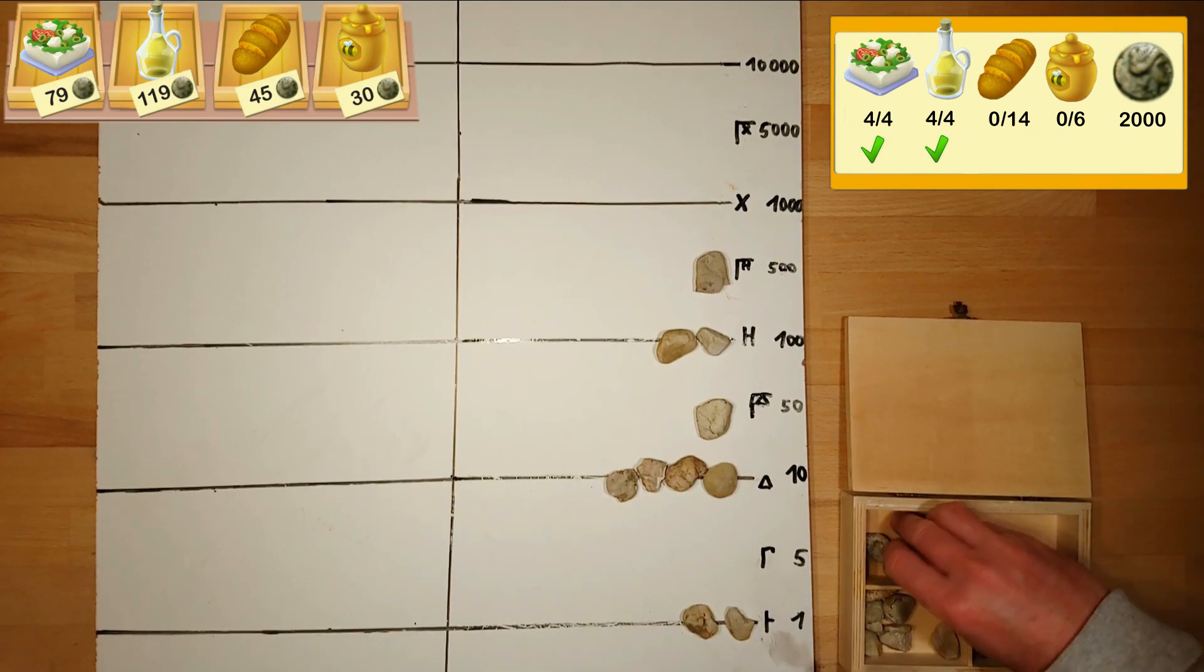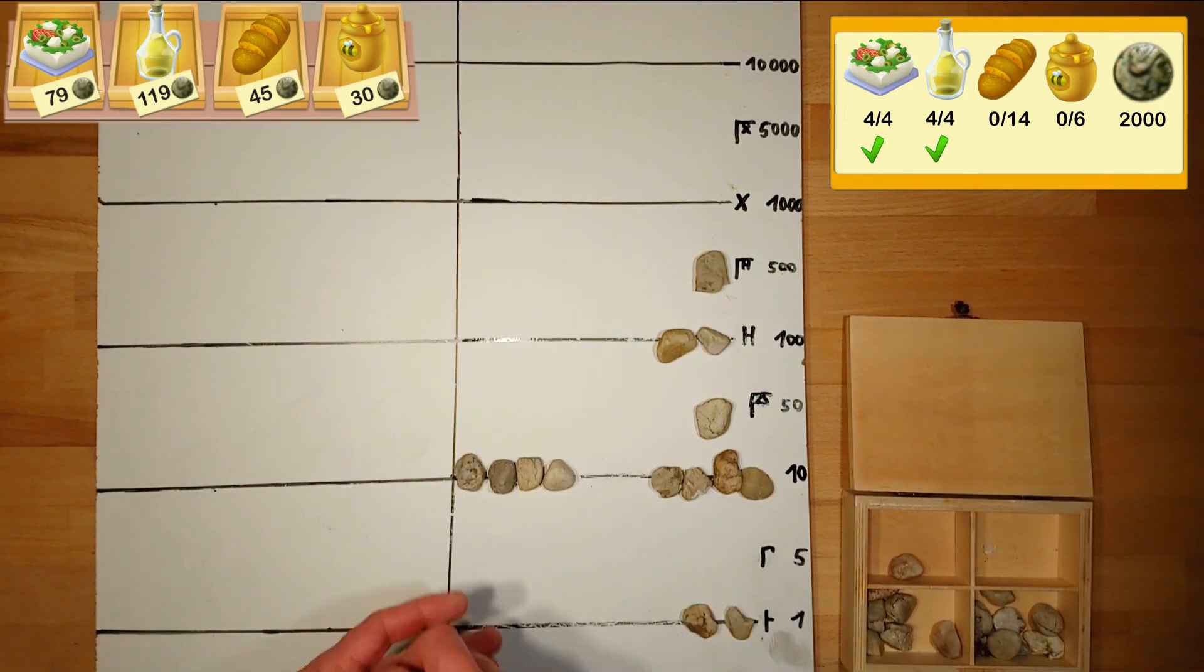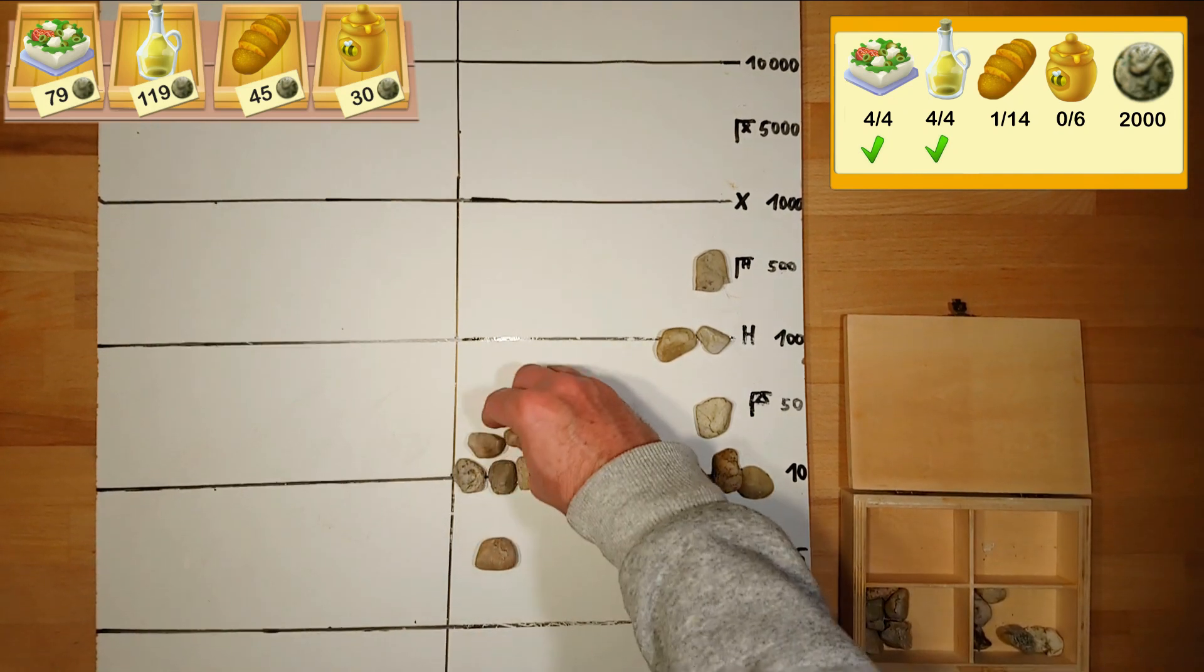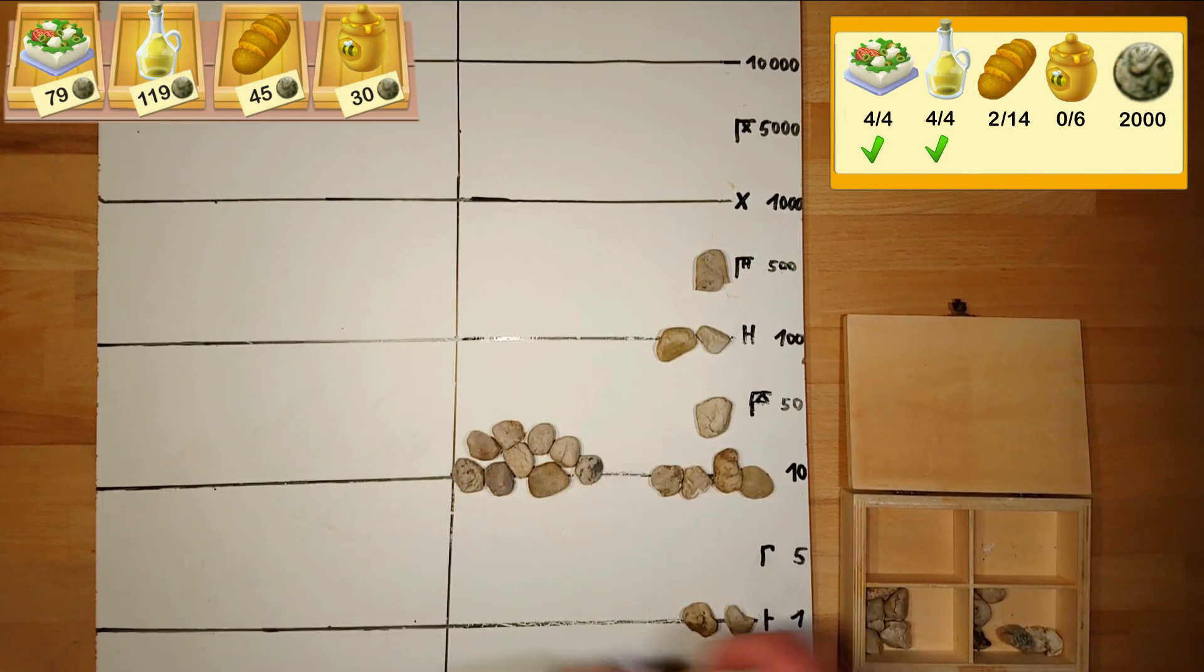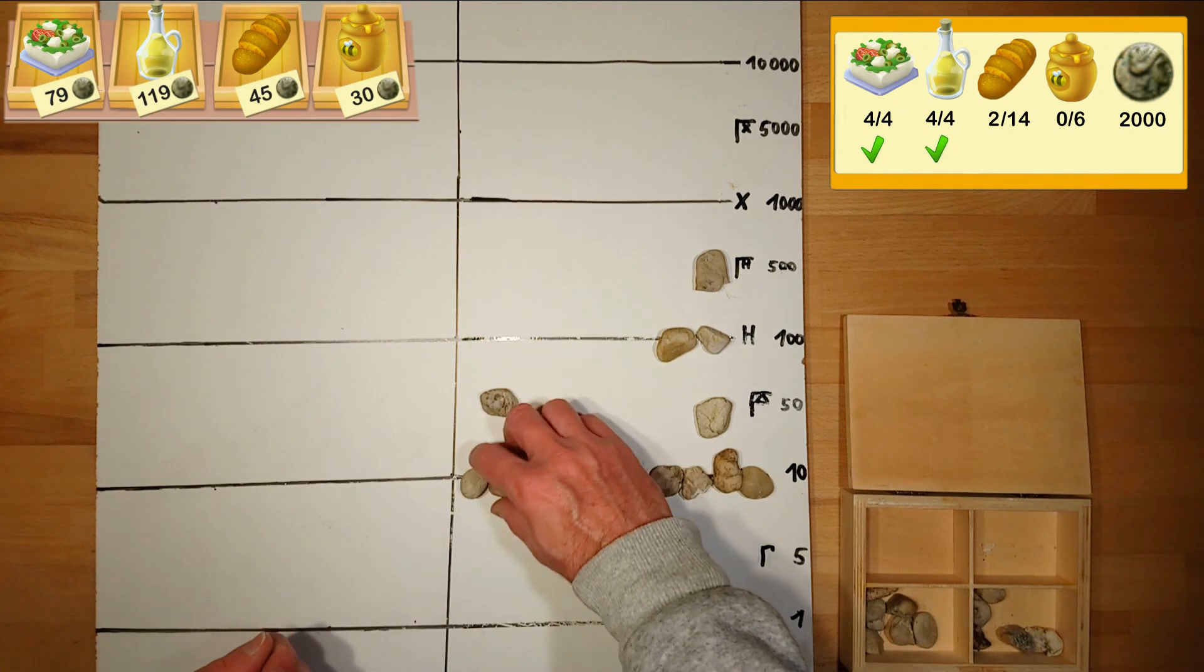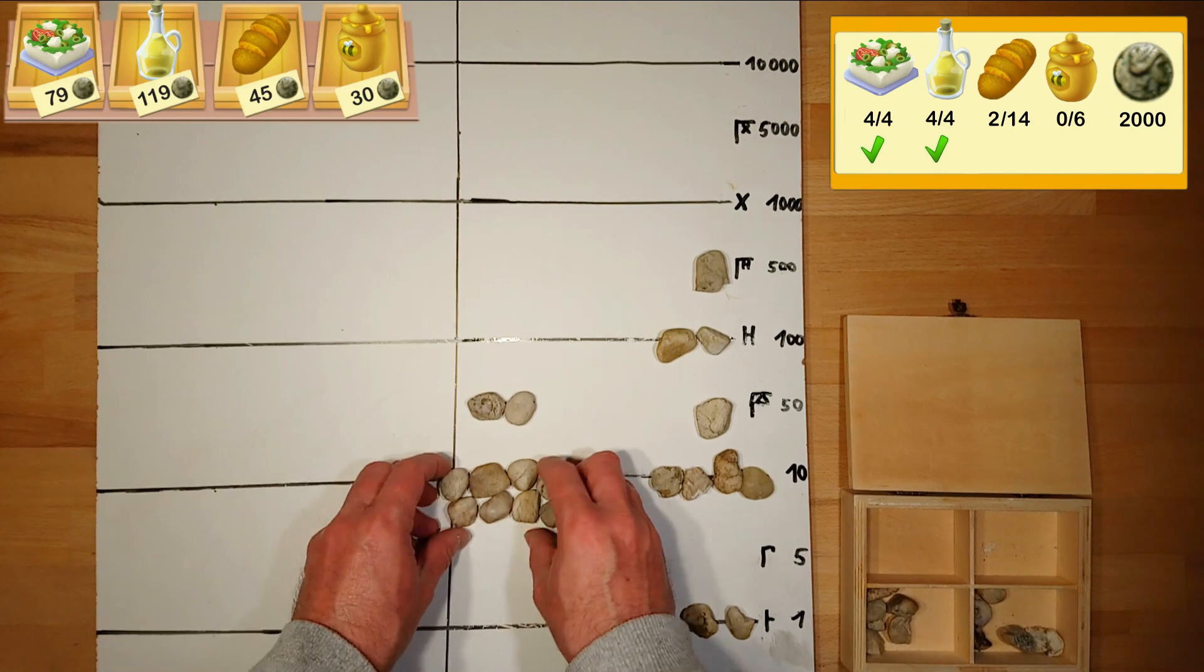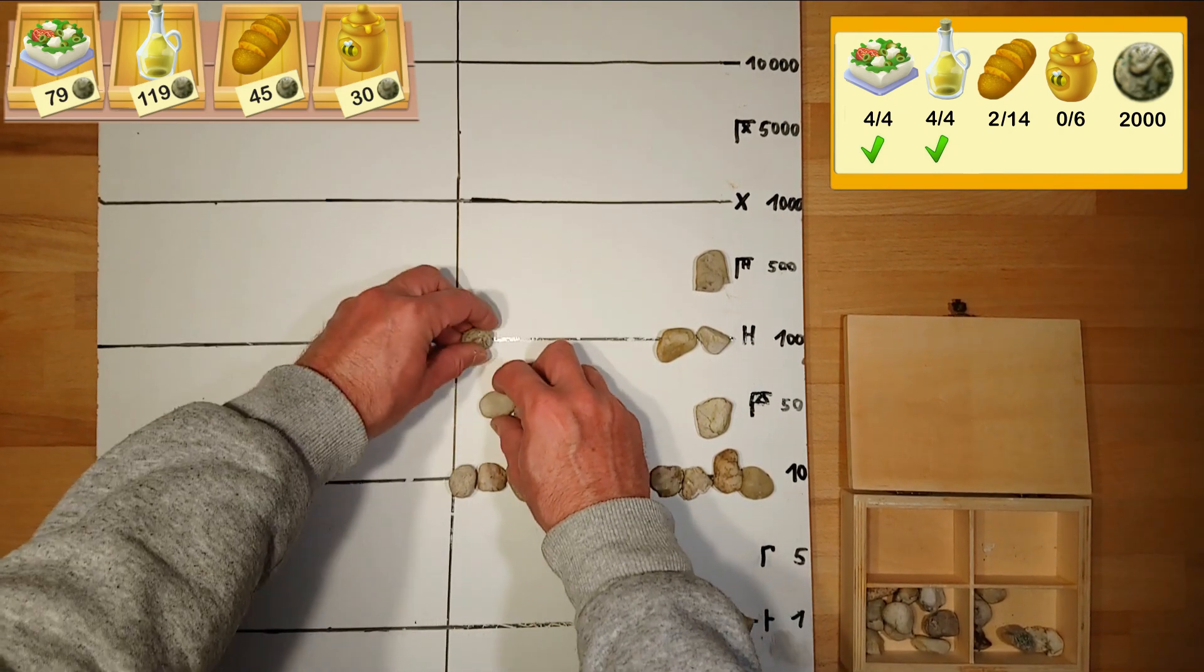Next we put the price for one bread on the board. It's 45 coins. We multiply this by two to get the price for two breads. We again multiply it by two and then have the price for four breads which is 180 coins.